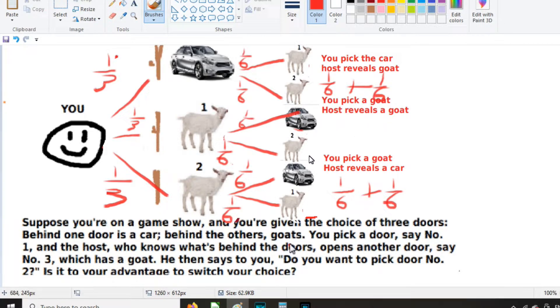You pick a goat and the host reveals a goat. Well, you could have picked goat one, in which case he could only have revealed goat two. So there's one-sixth chance of that. And you could have picked goat two, in which case he can only reveal goat one. So there's a one-sixth chance of that. This is the only ones where you pick a goat and the host reveals a goat.